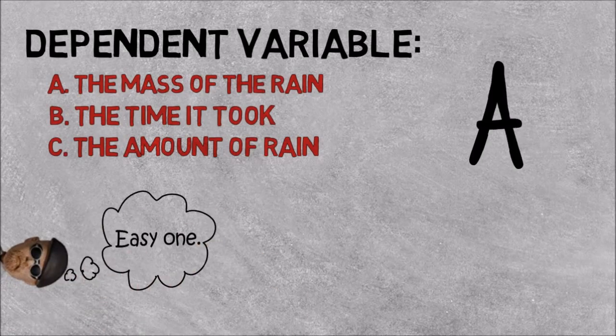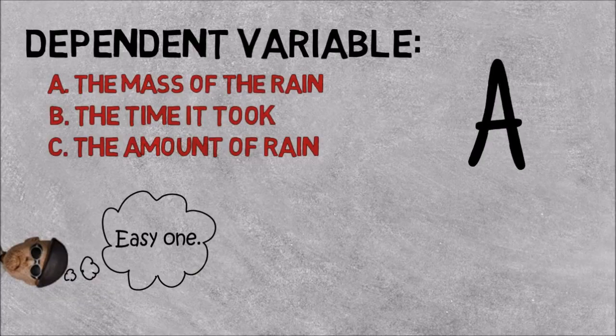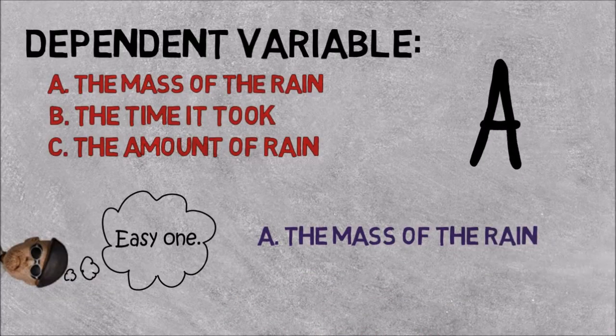The correct answer was A, the mass of the rain, because it depended on whether they were walking or running through the rain course.